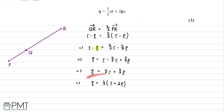Yes, this matches, so we write 'as required'. This question was worth three marks: the first mark for attempting the relevant vector by subtracting either way around, the second mark for expanding the brackets and beginning to rearrange, and the third mark for concluding with the correct answer — Q equals one third of R plus two P.